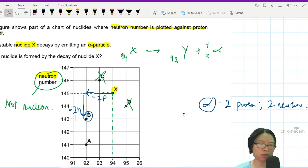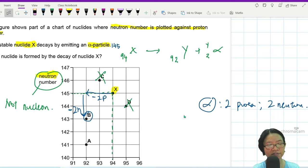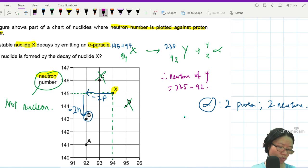If you want to balance the equation, then this will not be 145. This one is actually 145 plus 94. Which makes this one, if you want to double check, 145 plus 94 minus 4. This is 235. So you can double check and find the neutron number of Y will be 235 minus 92. This will be 143.